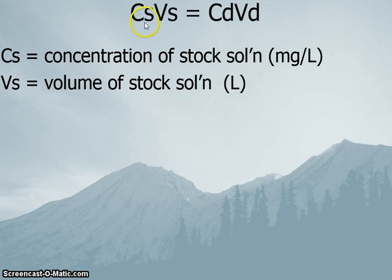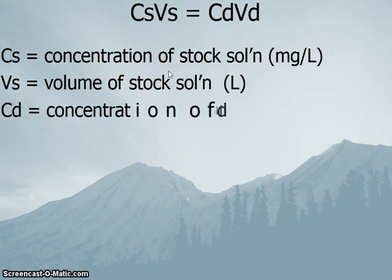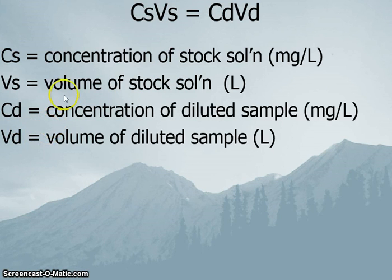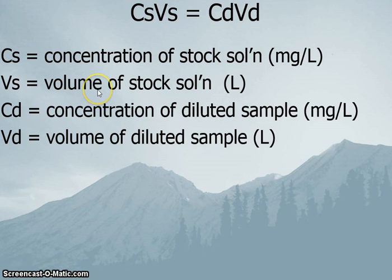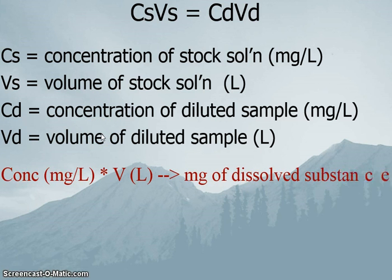We have concentration of the stock times the volume of the stock. You will be given a solution of known concentration, and you're going to add a certain amount to a volumetric flask, then dilute it to some new volume. For example, you might take 2 milliliters of a stock solution of a certain concentration and dilute it to a total volume of 10 milliliters — adding enough water to reach 10 milliliters. Like Kool-Aid: if you add water, it gets diluted and less colored.